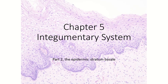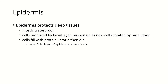In this next section we're going to start learning the layers of the epidermis. The epidermis is the top layer of the skin that protects the deep tissues. It's mostly waterproof. It's made up of cells produced by the basal layer, and each of those gets pushed up as new cells are created by mitosis. As the cells get pushed up, they produce a protein called keratin, fill up with that protein, and then die — so the cells on the most superficial layer are actually dead skin cells.